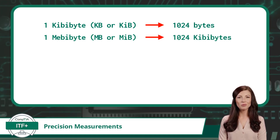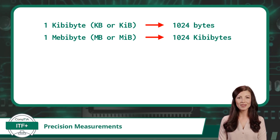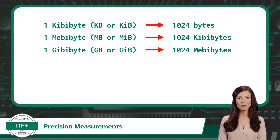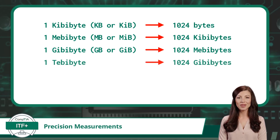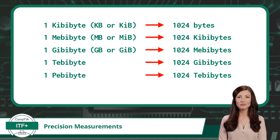Moving on, our next precision unit of measure is mebibyte. A single mebibyte is equal to 1024 kibibytes. Next, we have gibibyte — a single gibibyte is equal to 1024 mebibytes. Then there is tebibyte, and finally, pebibyte.